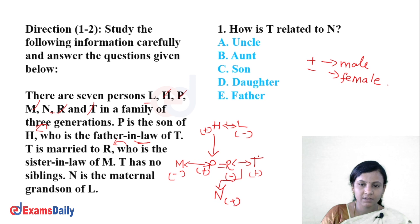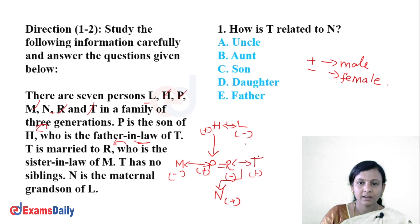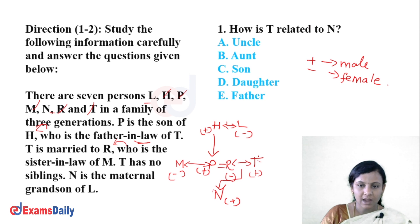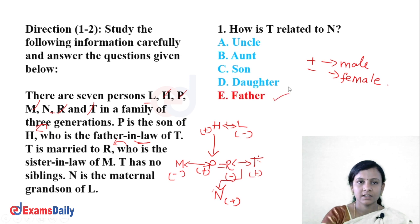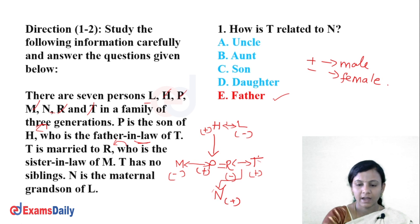So the son-in-law and family diagram are now established. T is the father of N. This completes the family diagram for the first question.